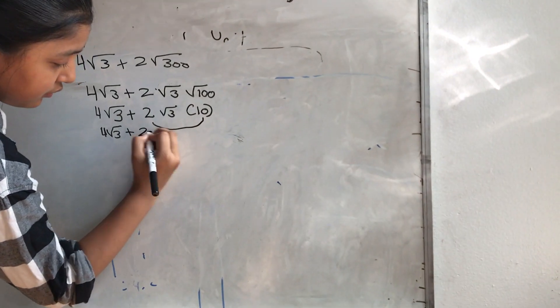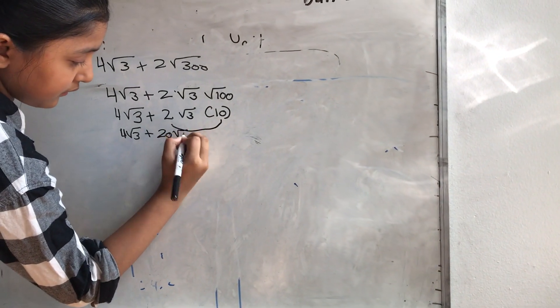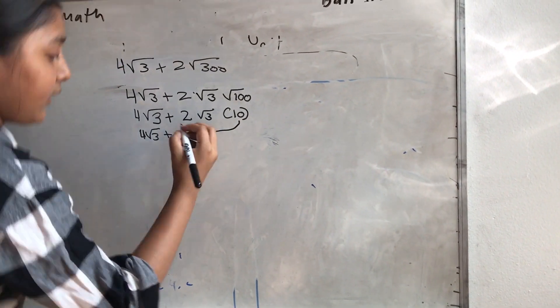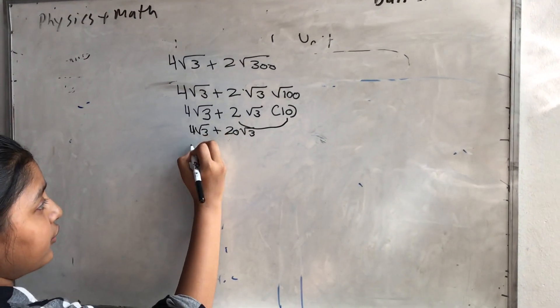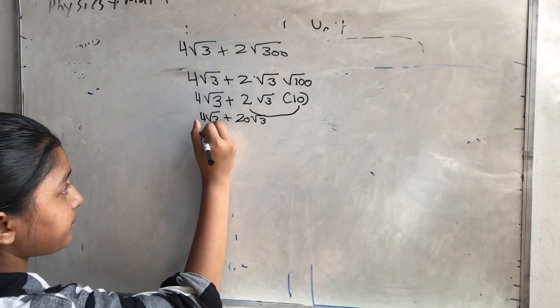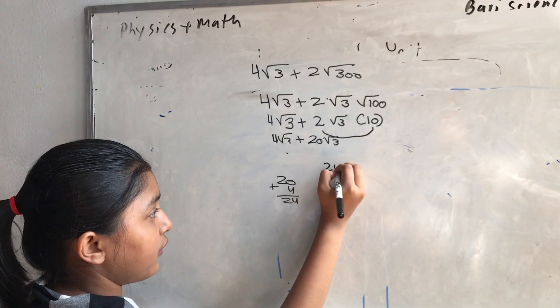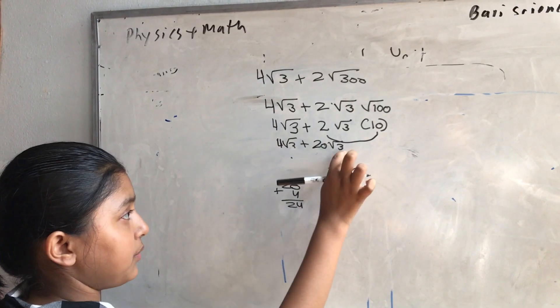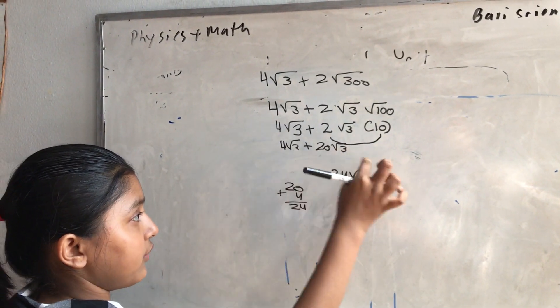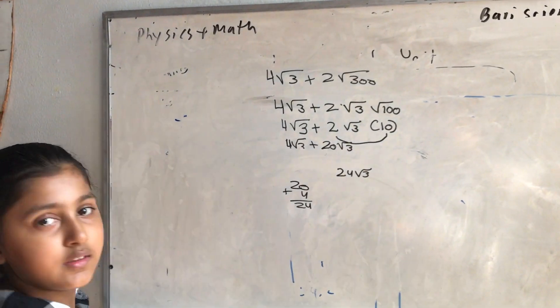It's 20 root 3. Then you do 24 root 3. You have to bring down the 3's and put it there.